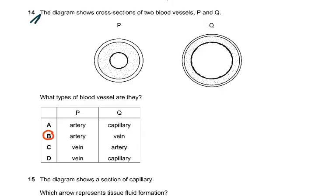Question 14: the diagram shows cross-sections of two blood vessels, P and Q. The small lumen is an artery and the large lumen is a vein. Arteries have thick walls and veins have thin walls. P was an artery and Q was a vein. A capillary is only one cell thick and wouldn't show a visible wall in a cross-section.